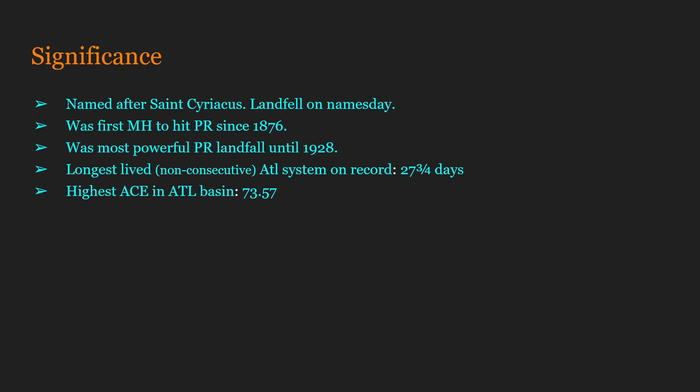This hurricane also holds the highest accumulated cyclone energy of any individual hurricane ever recorded in the Atlantic Basin, with an ACE of 73.57. It is the first and still the only tropical system in the Atlantic Basin to reach an ACE at or above 70, and remains the highest ACE on record to this day.